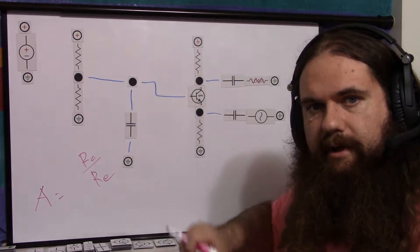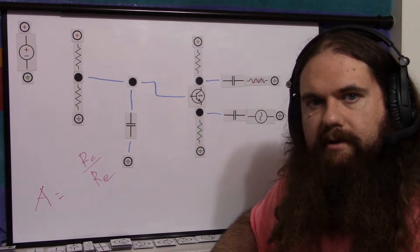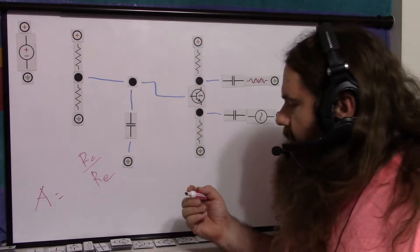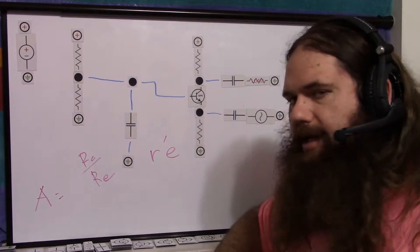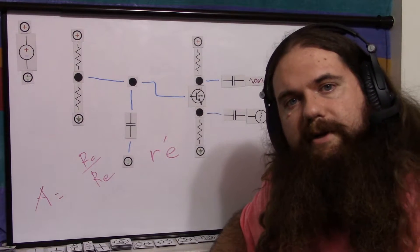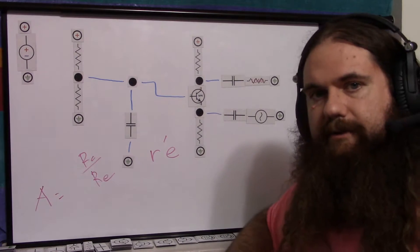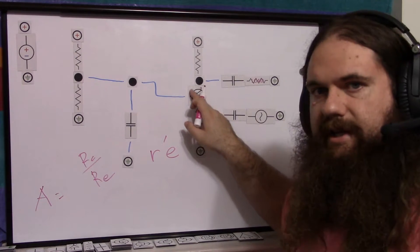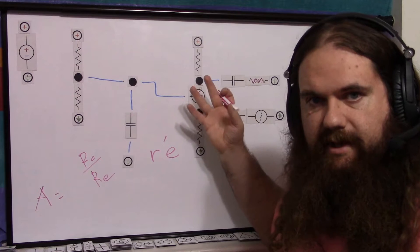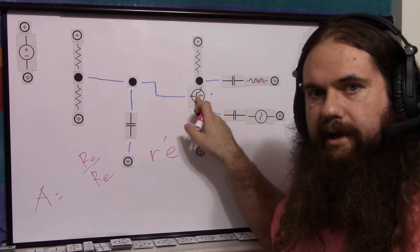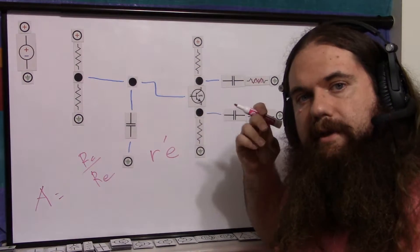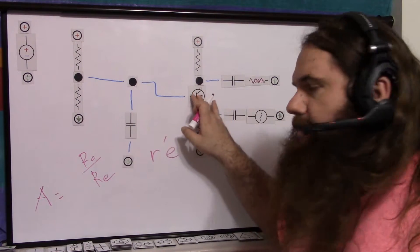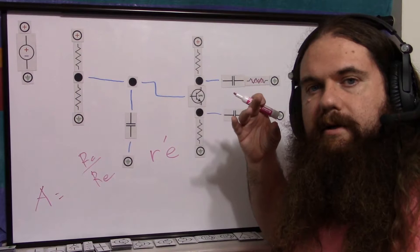But what about RE? The base emitter junction of a BJT has something called dynamic emitter resistance, which they mark as lowercase r apostrophe lowercase e. I don't know why I've been afraid to look, but that's what they write. So basically, it's just the internal resistance because this is a semiconductor. This is not just a wire in here. It's a semiconductor, so it has a certain resistance.